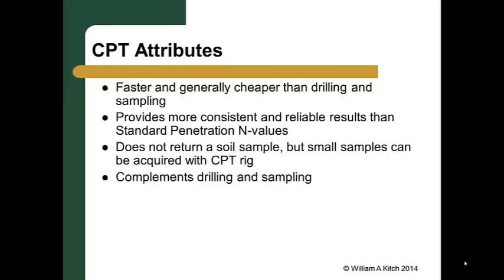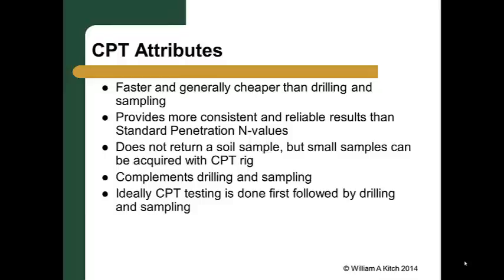For these reasons, the cone penetrometer does not usually replace drilling and sampling, but instead complements it. There are many more sampling methods available for drill rigs than for CPT rigs. If laboratory strength and compressibility tests are needed, high quality undisturbed samples will have to be acquired, and these can be retrieved only through drilling and sampling. Because of the speed of CPT testing and its continuous profile, many geotechnical engineers recommend using CPT as the initial site investigation tool, and following up with drilling and sampling after analyzing the CPT results. The CPT data can be used to determine the locations on site where high quality samples are needed, thereby reducing the number of boreholes required.